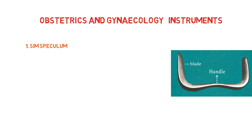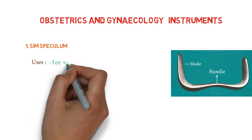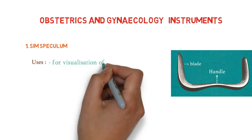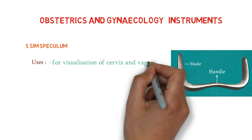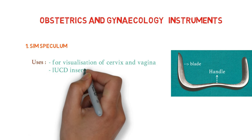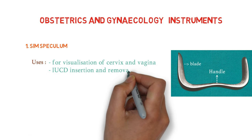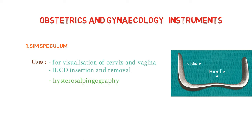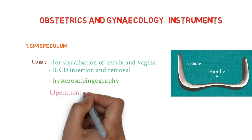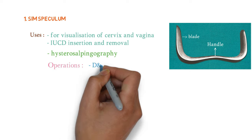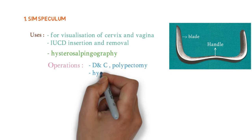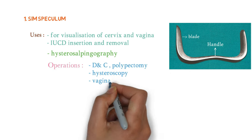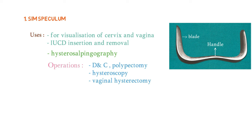The next question the examiner asks is: what are the uses? The first use is visualization of the cervix and vagina. The second use is IUCD insertion and removal. It can be used in a radiology department for hysterosalpingography. It is also used in operations like dilation and curettage, polypectomy, hysteroscopy, and vaginal hysterectomy.